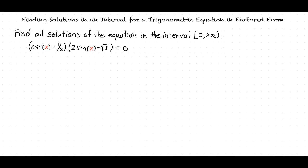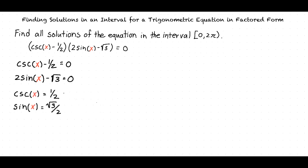Our first step is to set each factor in the equation equal to 0. This shows that we will want to find values of x that will make cosecant of x equal to one-half, and sine of x equal to square root of 3 divided by 2, on the interval 0 to 2π.